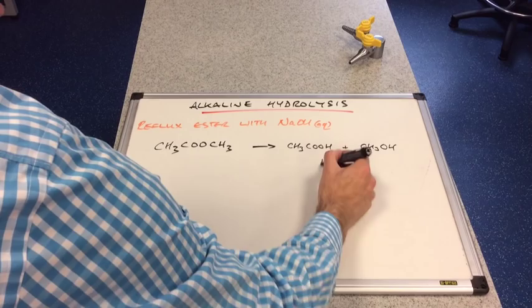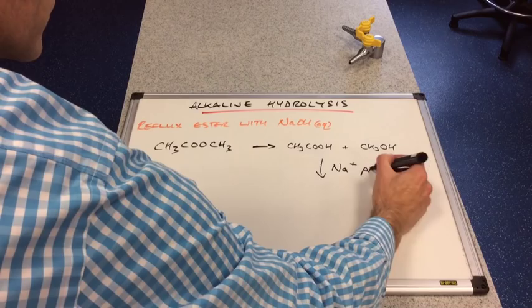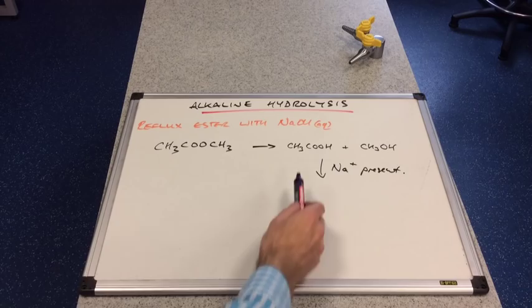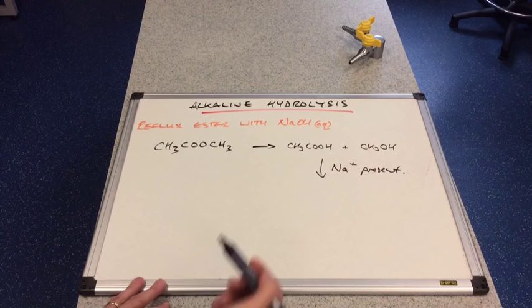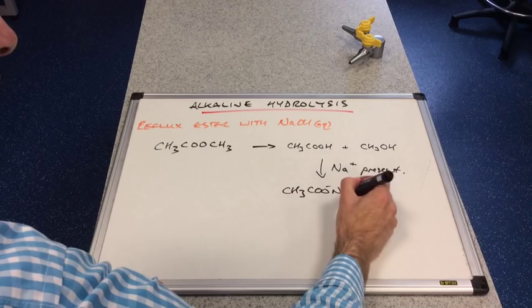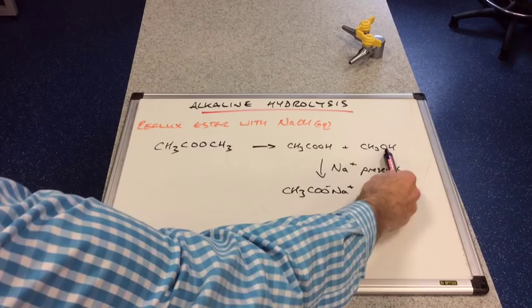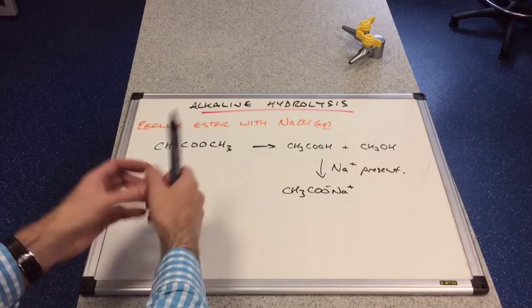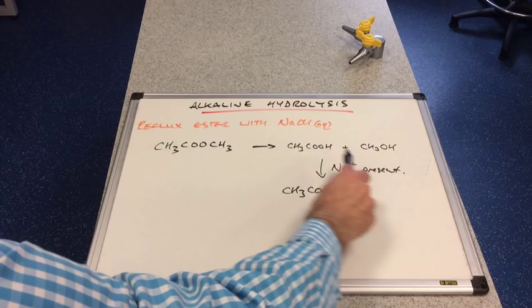Now, factor in the fact that we've got some sodium ions present from the sodium hydroxide. So what will that do? That will create a salt. So instead of getting the carboxylic acid, with alkaline hydrolysis, we get the carboxylate salt. So we're going to get CH3, COO-, Na+. So we still get the alcohol, but we get the carboxylate salt instead. So hydrolysis splits it up, but we've got to factor in we've got metal ions present from the alkali.